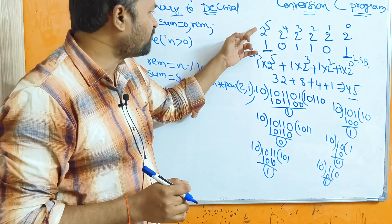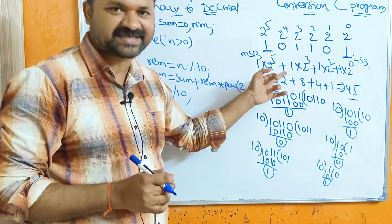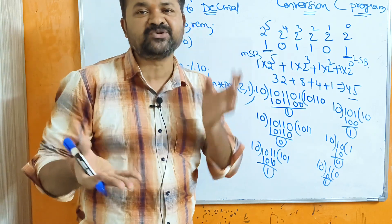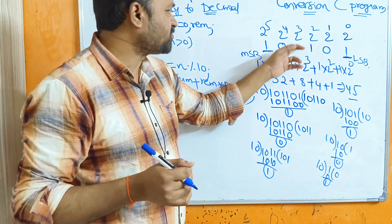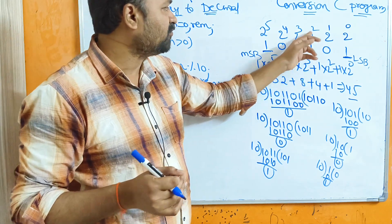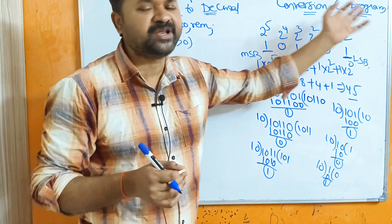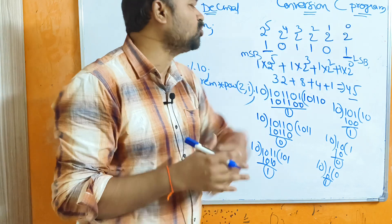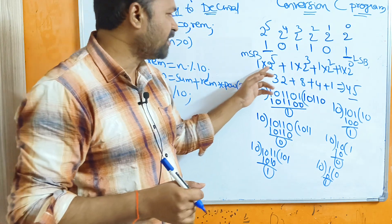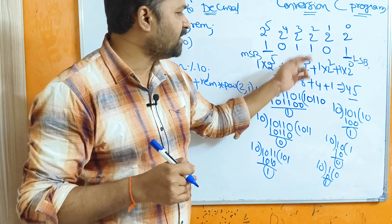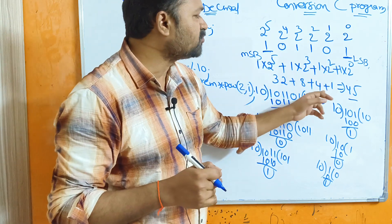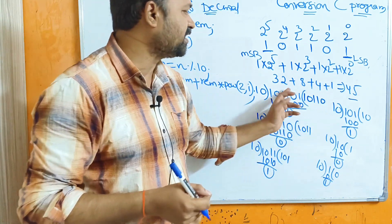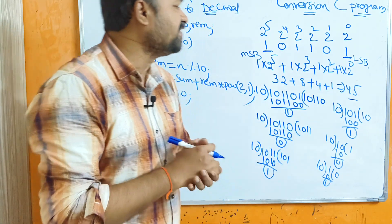So: 1 × 2⁵ + 0 × 2⁴ + 1 × 2³ + 1 × 2² + 0 × 2¹ + 1 × 2⁰. Since 0 into anything is 0, we get: 32 + 8 + 4 + 1 = 45. So the decimal equivalent of binary 101101 is 45.